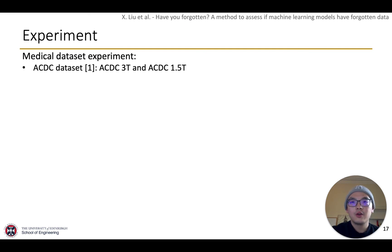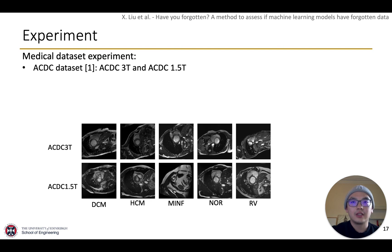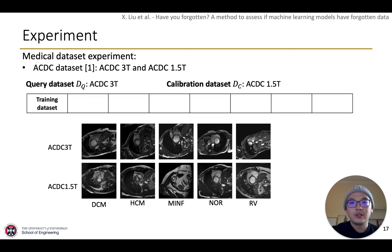For medical dataset, we divide ACDC to two subdatasets, ACDC3T and ACDC1.5T, according to the data's magnetic strengths. For each subdataset, there are five classes including health to different diseases. We choose ACDC3T as the query dataset, and use ACDC1.5T as the calibration dataset. We consider different D star datasets. The three cases does not contain the query dataset, and the four cases contain query dataset.